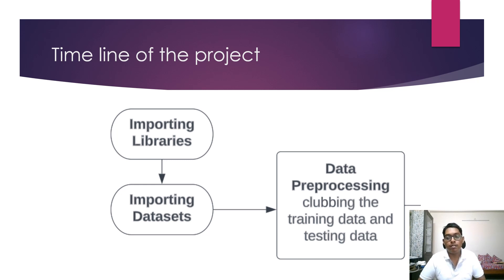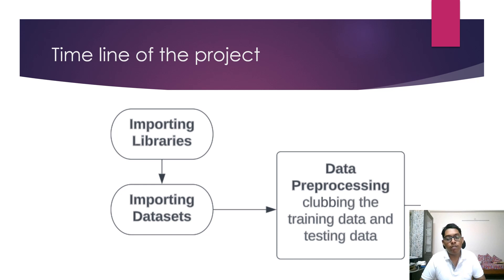Up next is feature extraction, where we can do various operations on data. Then feature selection, where we can identify relations and deploy a heat map. The next stage is model building using ML algorithms to create a model. After that is the Python Pickle model, where data is stored in binary mode in a .pkl file. Then the web application model is created with the help of Flask tools and features, and finally we can find the predicted price as the output.